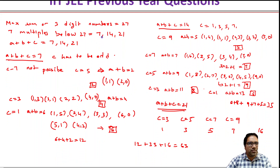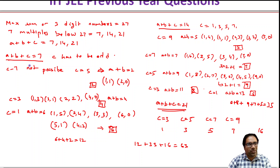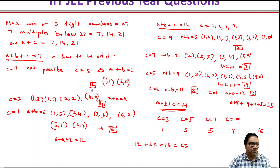When a plus b plus c equals 7 and c has to be odd, c can be 1, 3, 5, or 7. C equals 7 is not possible because then a and b would both have to be 0, making it not a three-digit number. If c is 5, a plus b equals 2, giving pairs (1,1) or (2,0) — so 2 options. If c is 3, a plus b equals 4, giving pairs (1,3), (3,1), (2,2), (4,0) — so 4 options.